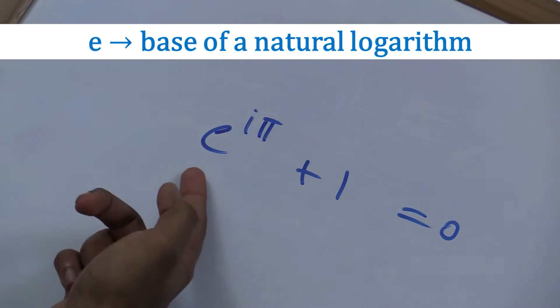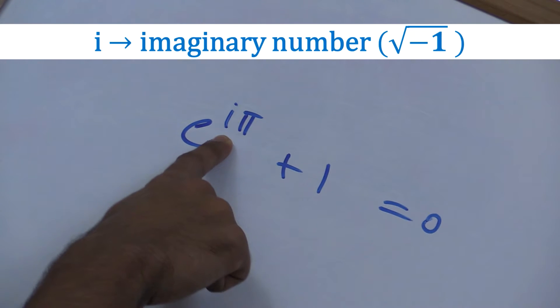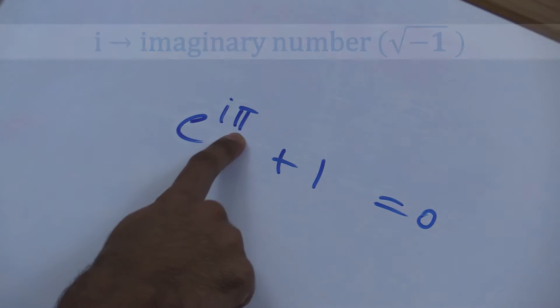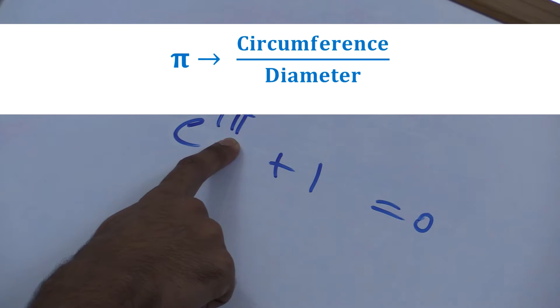e is the base of the natural logarithm. i is an imaginary number, the square root of negative 1, and π is the ratio of a circle's circumference to its diameter. How are e, i, and π connected, and how does this equal negative 1?